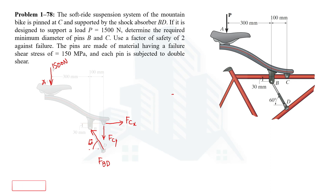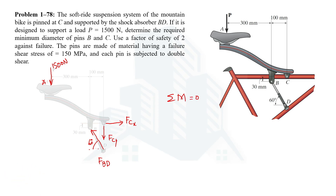Let's use the conditions of equilibrium to determine these unknown forces. We'll use the third condition of equilibrium: the summation of all moments acting at any point equals zero. Taking C as our reference point so that FCX and FCY produce zero moment, and taking clockwise moments as positive.